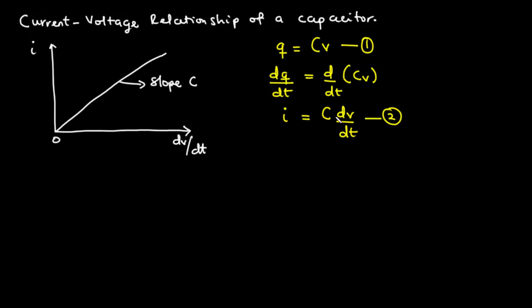Now, assuming we want to graph this relationship, we plot dV/dt on the horizontal axis against i on the vertical axis. We get a straight line, and the slope of that line is the capacitance C of the capacitor.